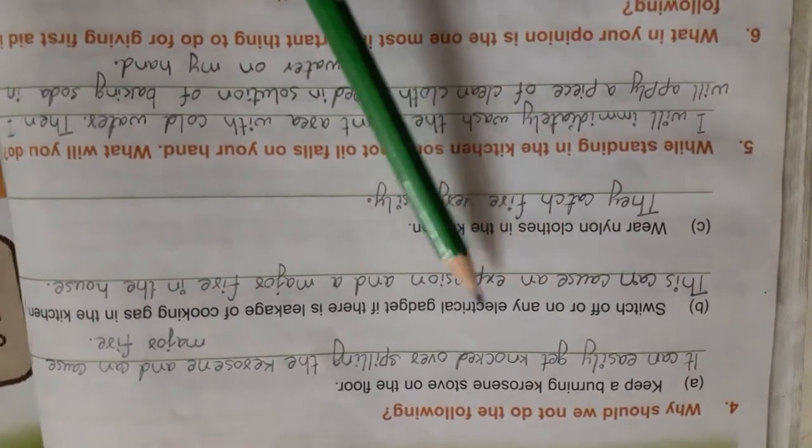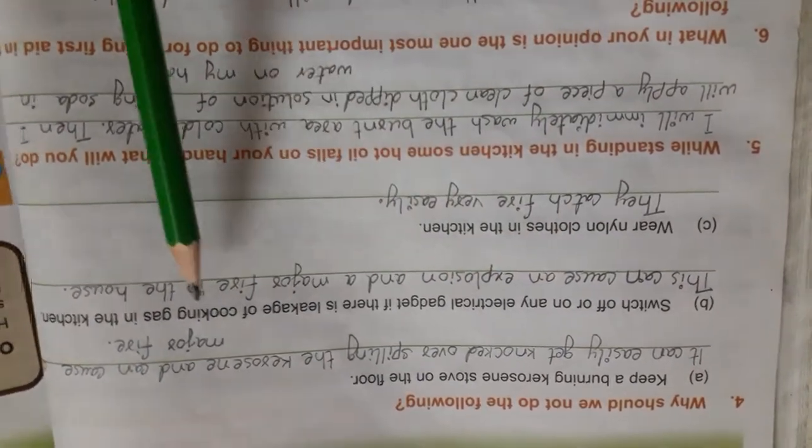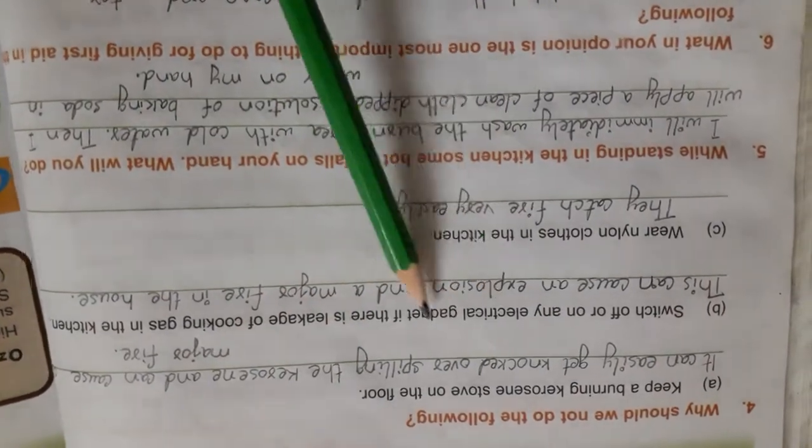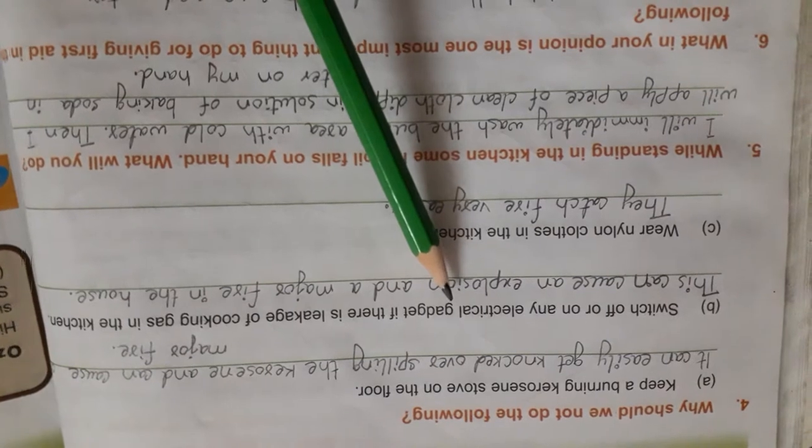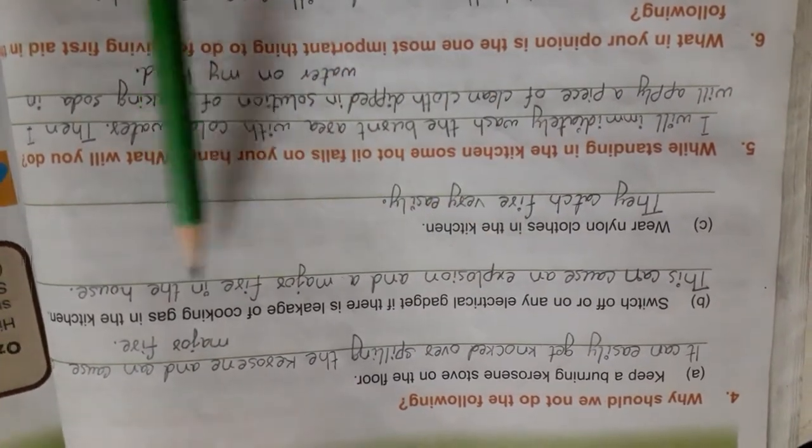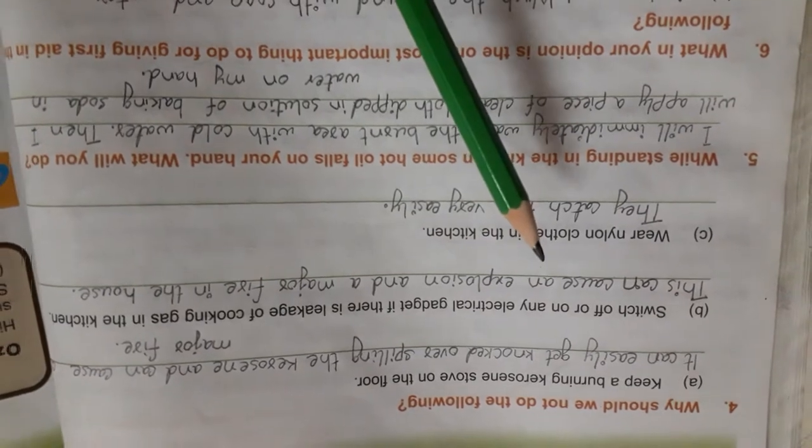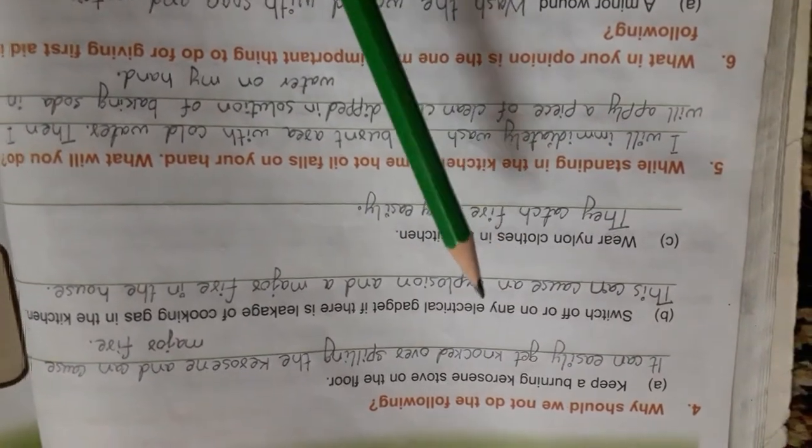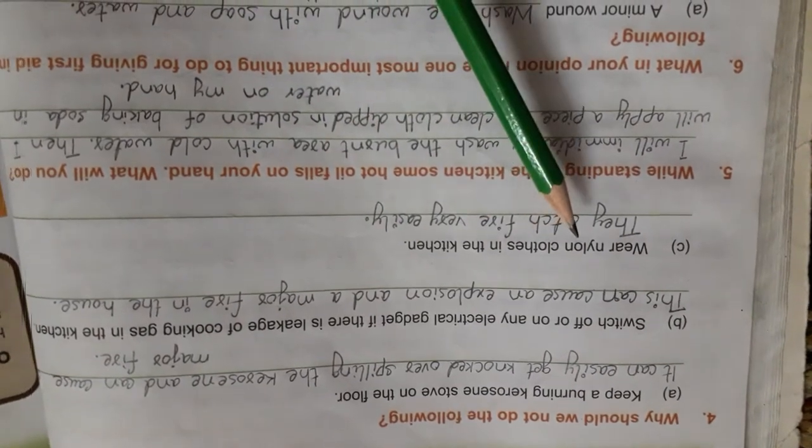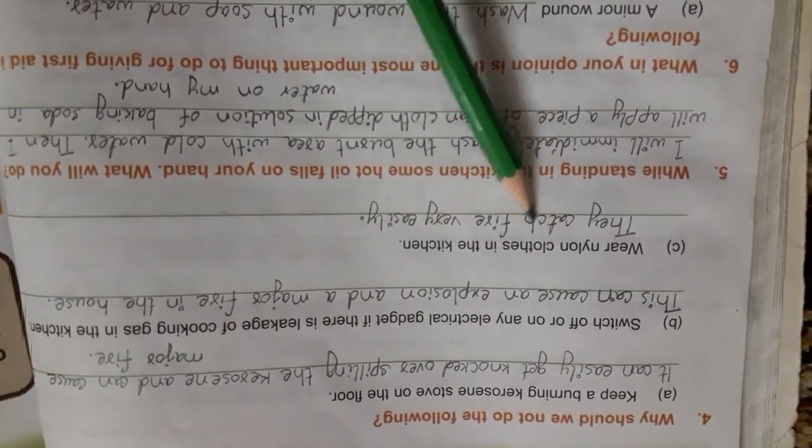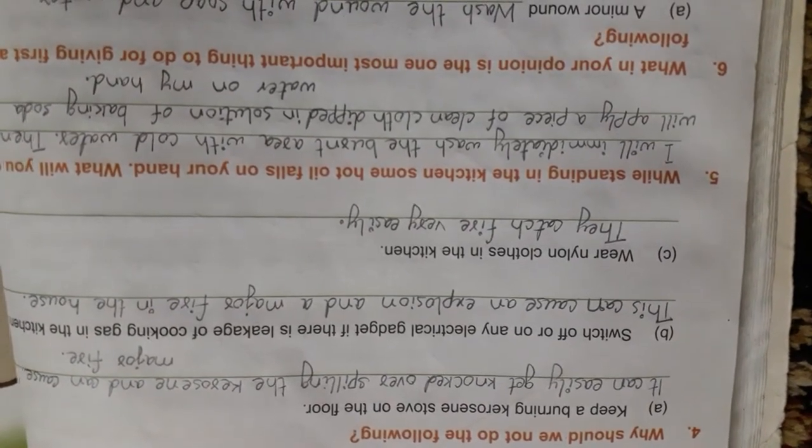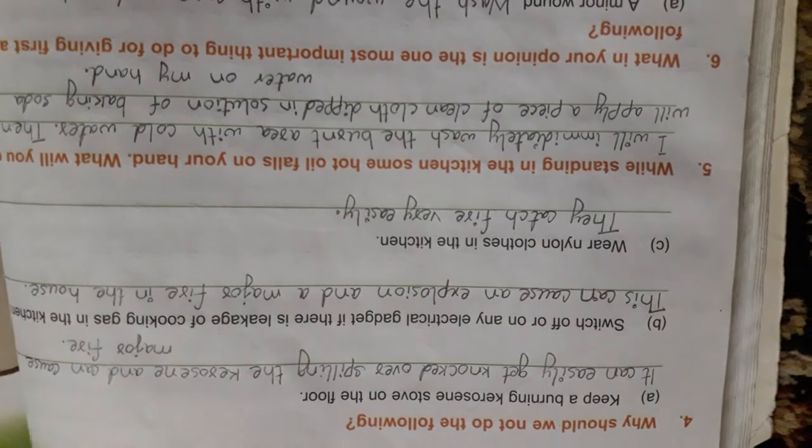Switch on or off any electrical gadget if there is leakage of cooking gas in the kitchen. Why? This can cause an explosion and a major fire in the house. If gas is leaking, it can be a fire. Wear nylon clothes in the kitchen. Why should we not wear nylon clothes in the kitchen? Because they can catch fire very easily.